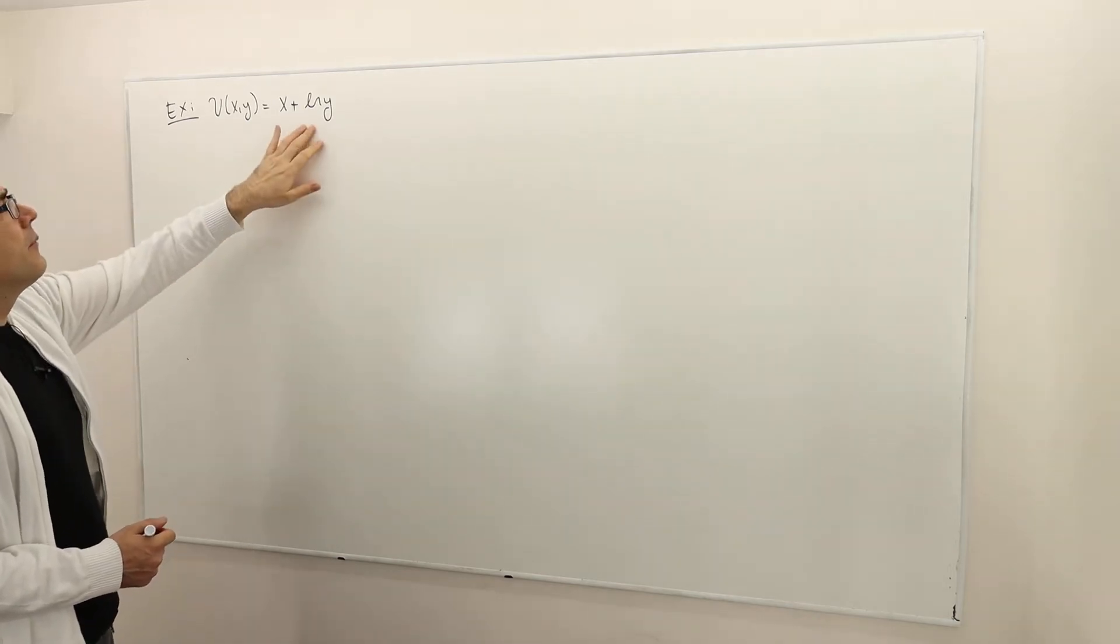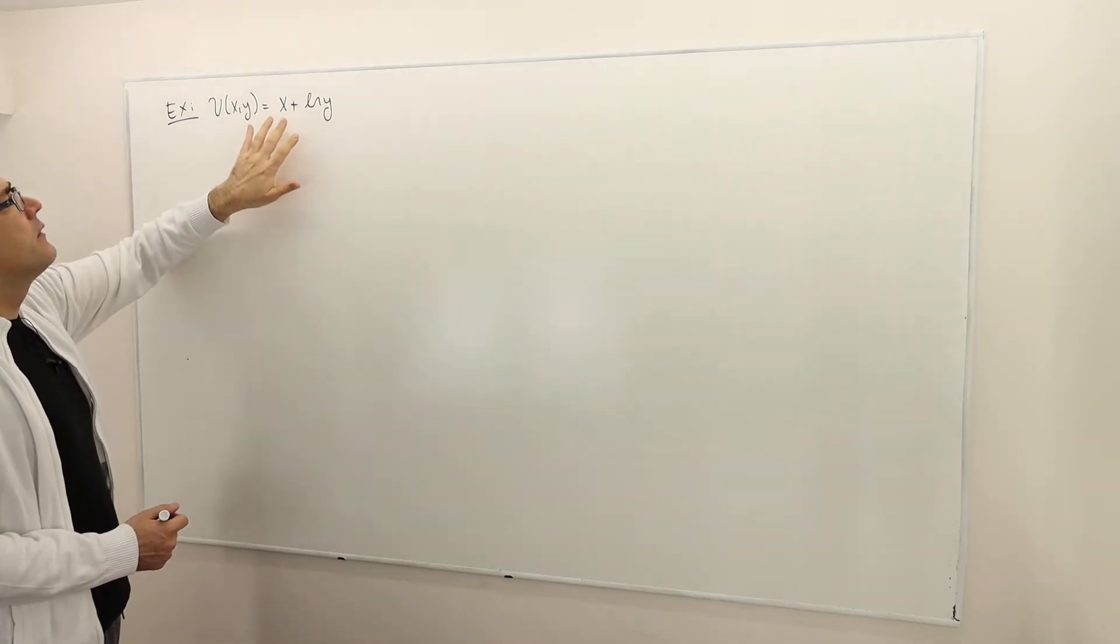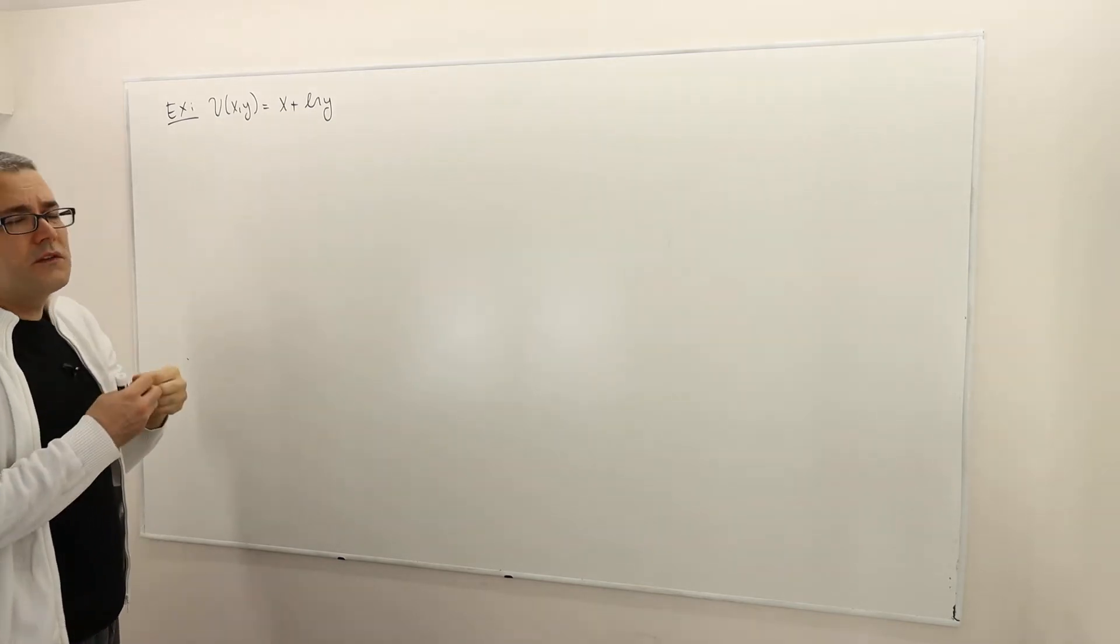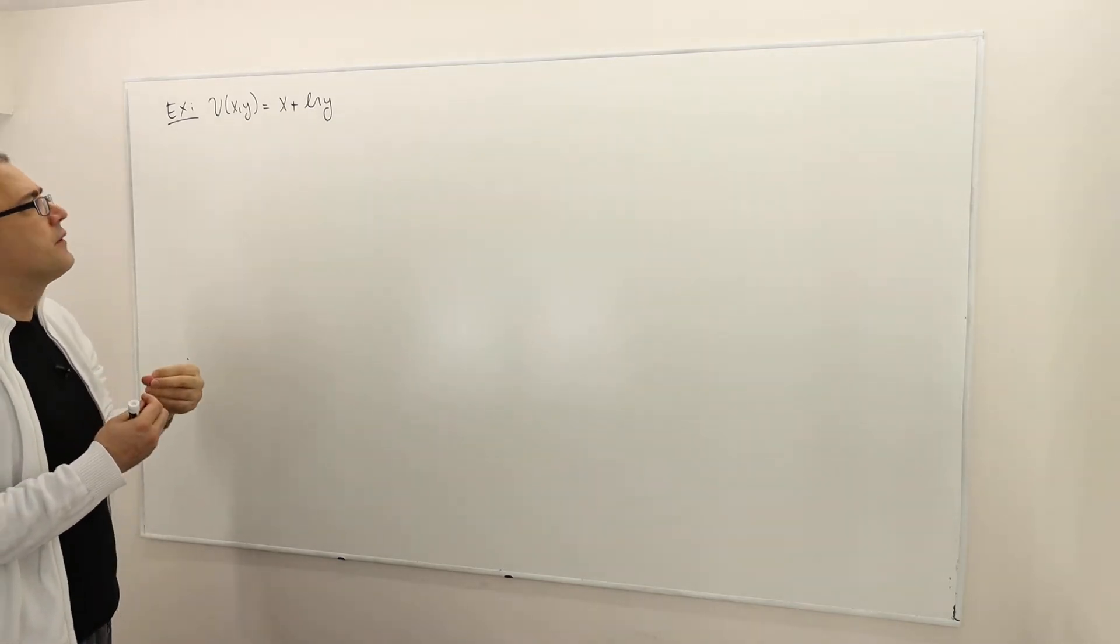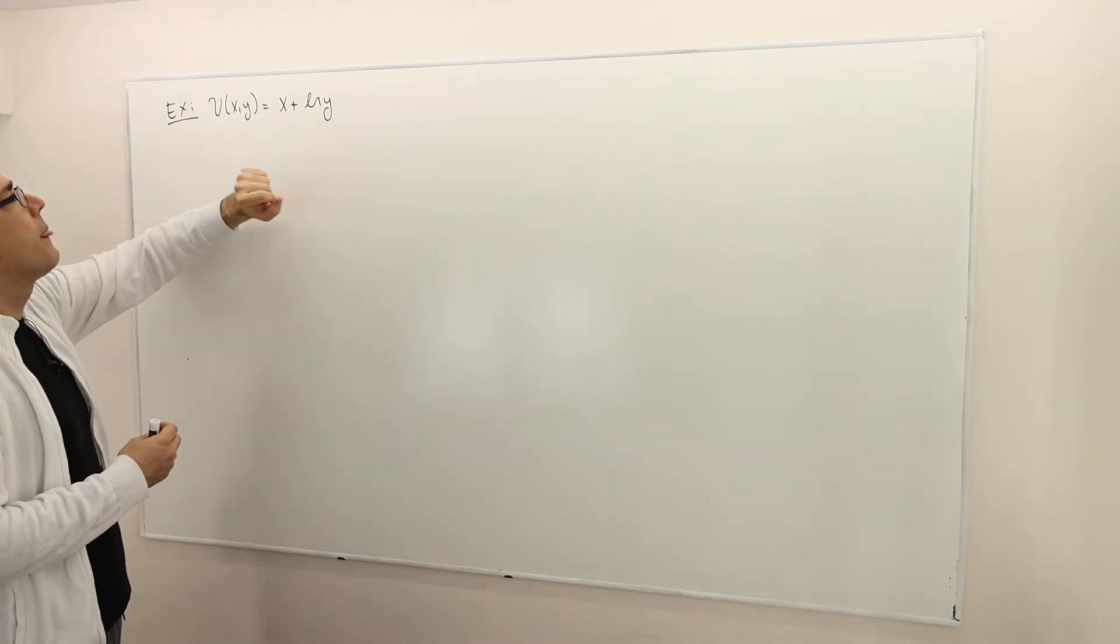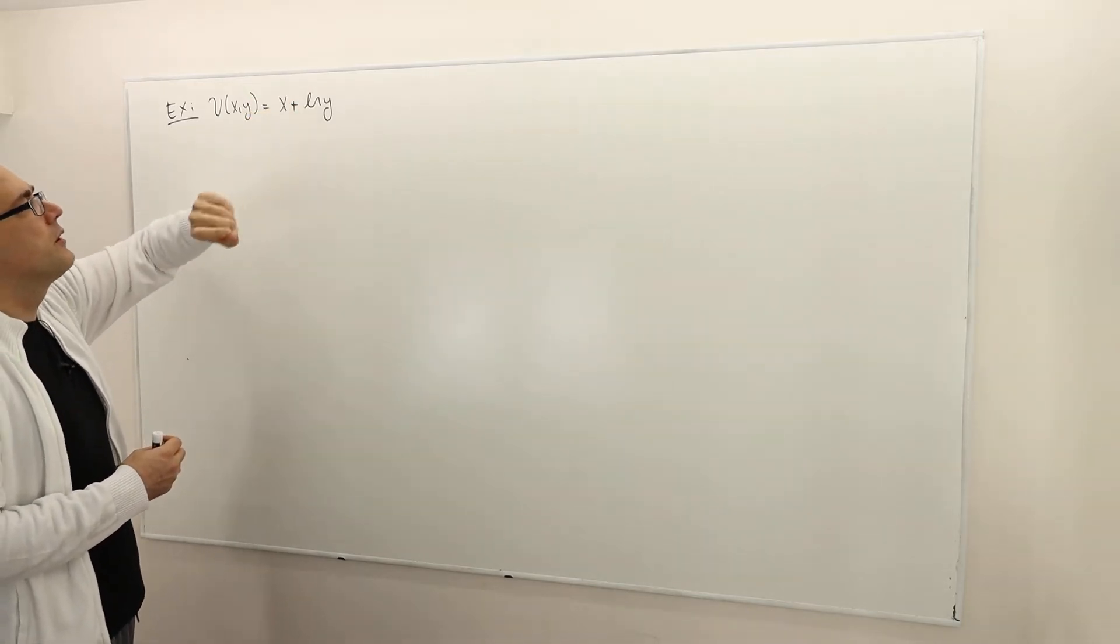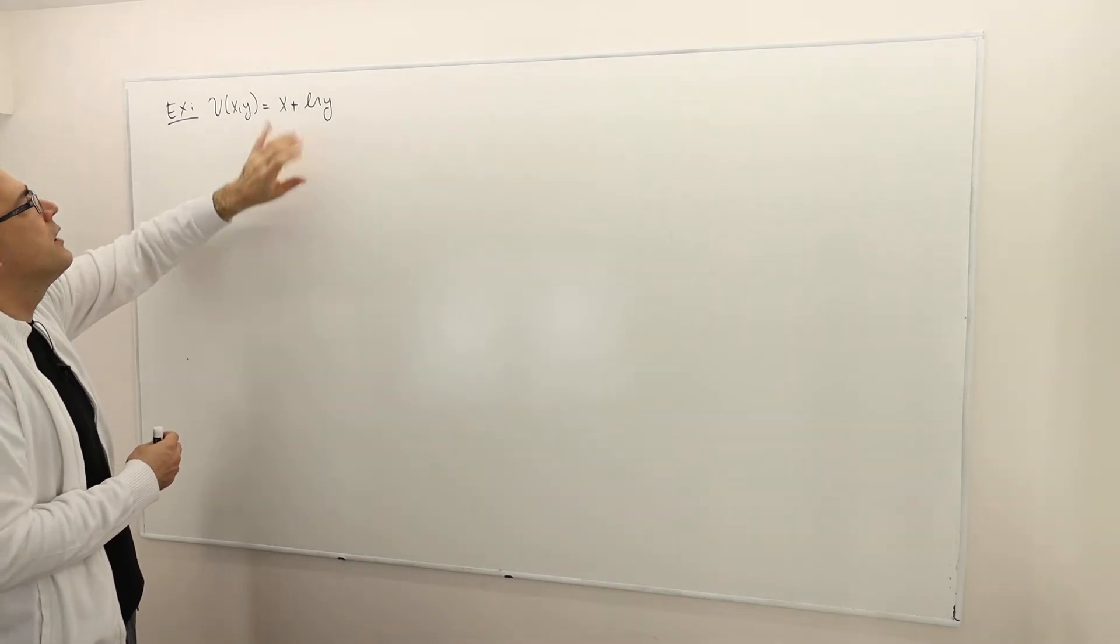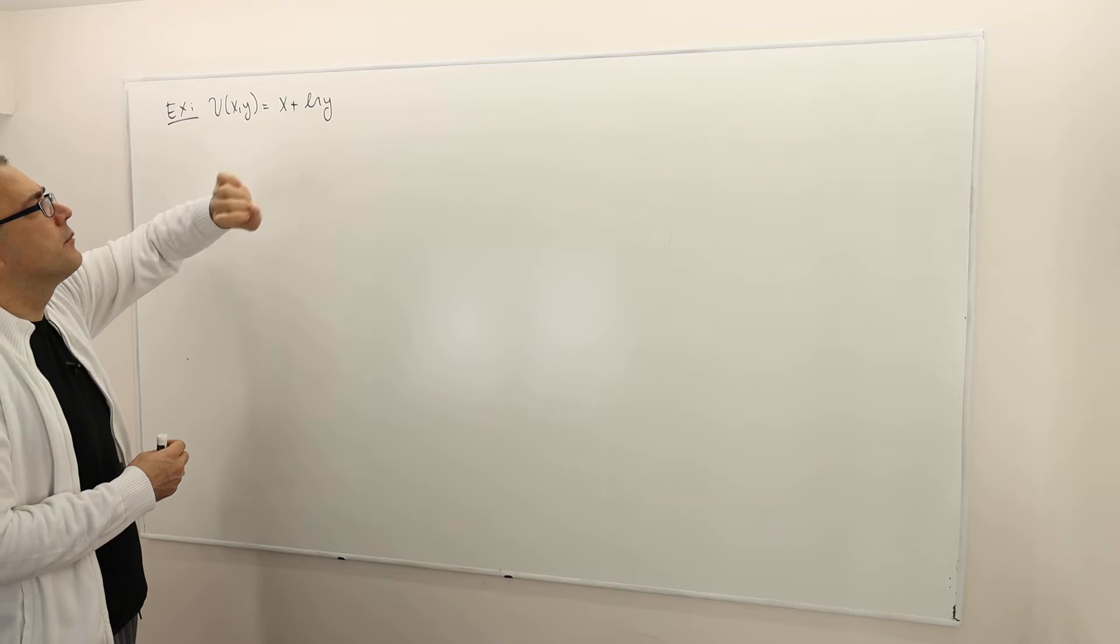The first component and the second component, it looks like the utility function is perfect substitute. Well it's not. That's important because most of the times the optimization problem has an interior solution and that's mainly because of the second part.